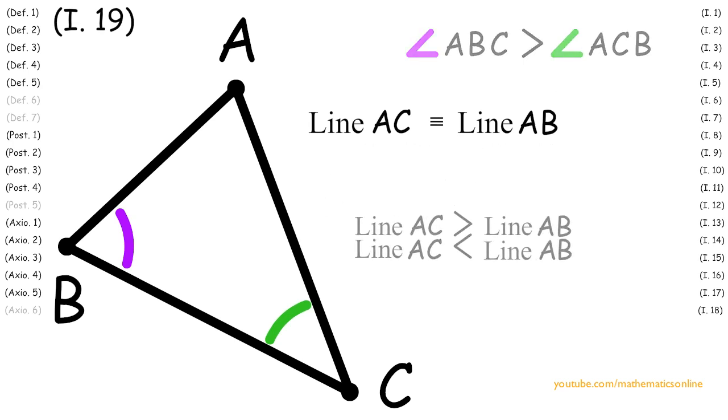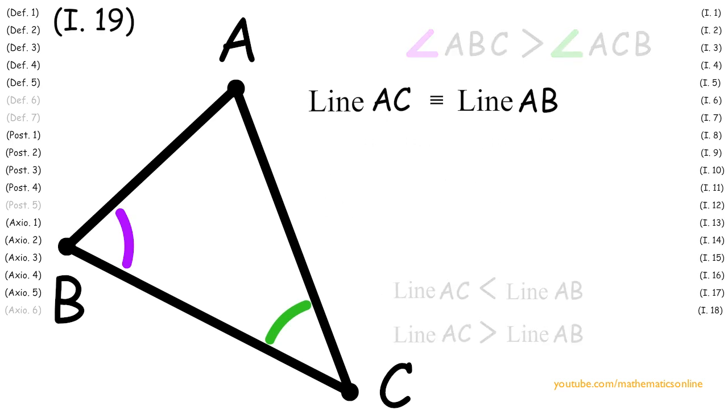First, let's assume that line AC is congruent to line AB. Now, since triangle ABC has two sides that are congruent, then by Proposition 5, angle ABC is congruent to angle ACB.